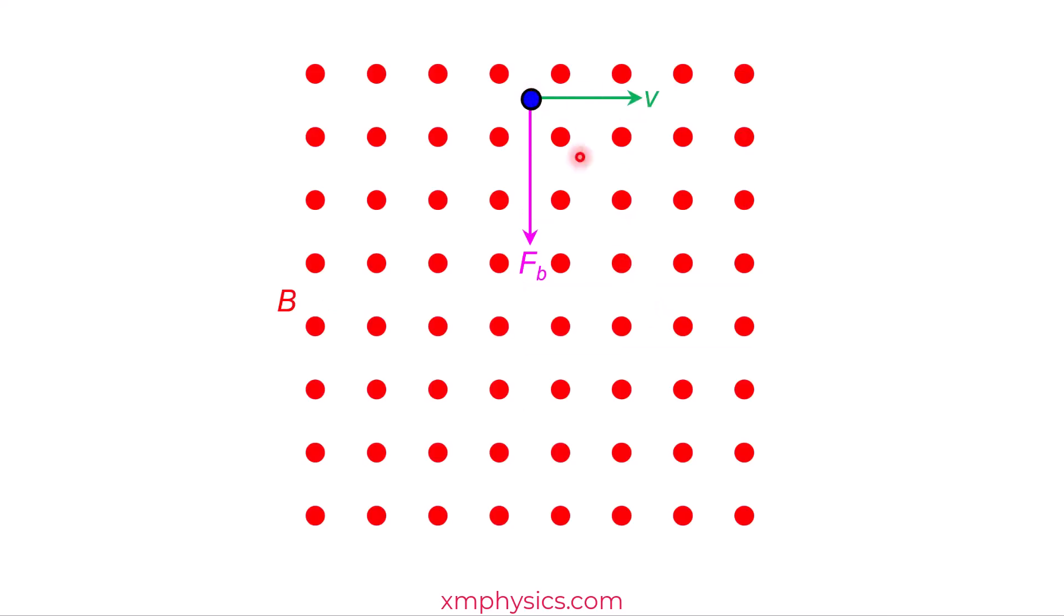If the velocity is perpendicular to the magnetic field, like the one illustrated here, it's going to experience a BQV force, and the BQV force will always be perpendicular to the velocity, thus providing a centripetal force, and the resulting motion is a circular path.